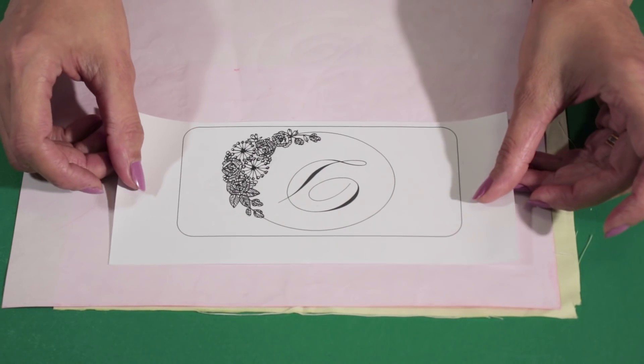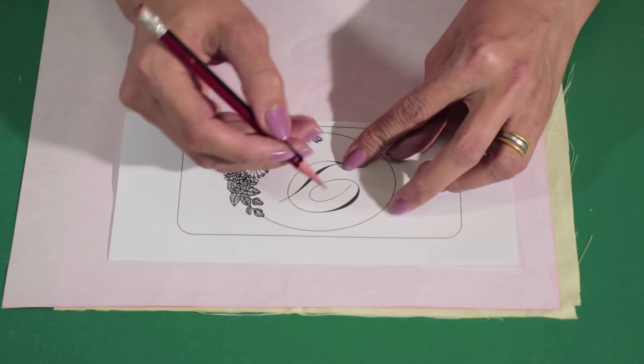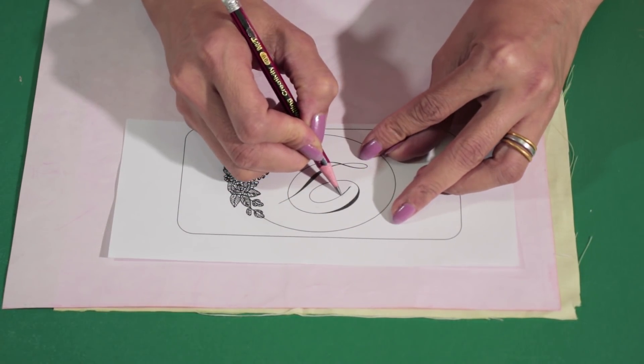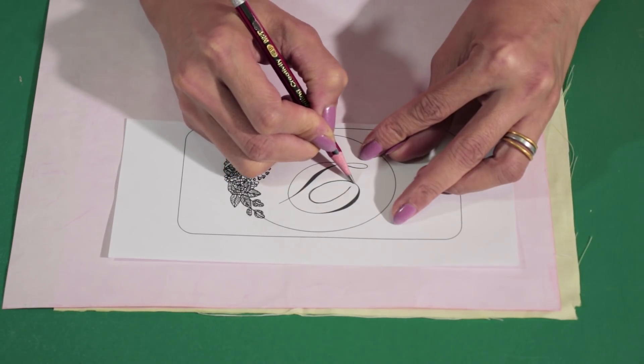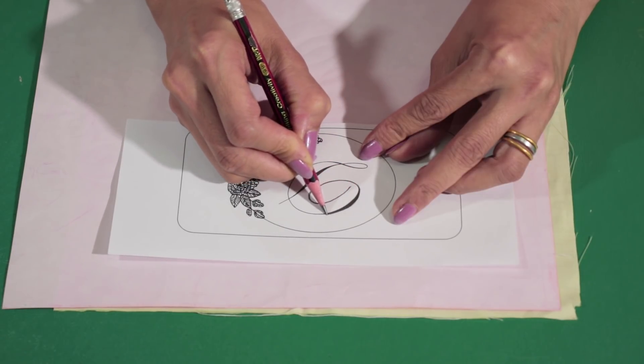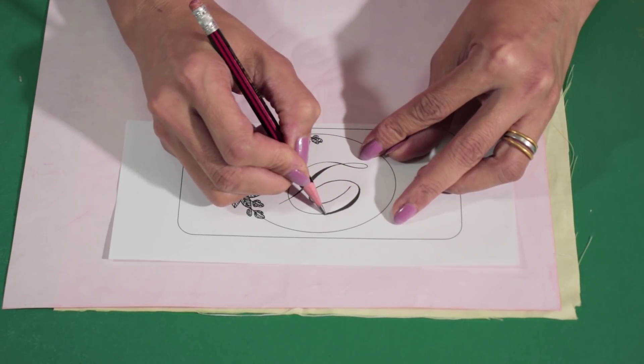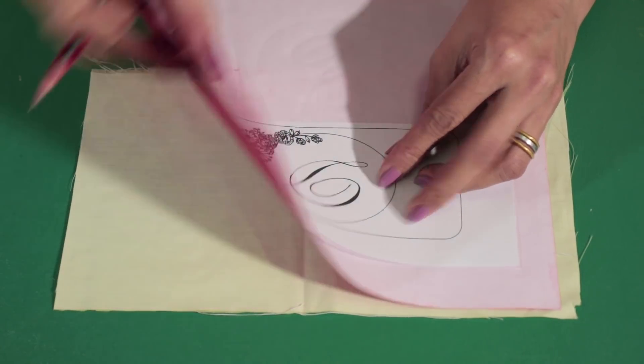Now use a pencil to just trace the line on the paper and the fabric. Just medium pressure on it, just a little bit, not too much, not too hard. Okay, just like that. And here you have the pattern on the fabric.